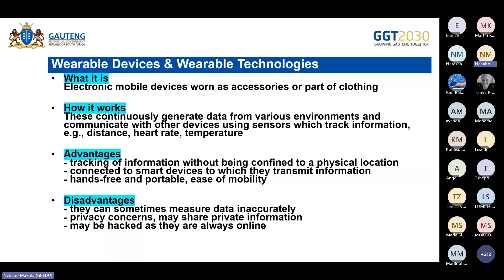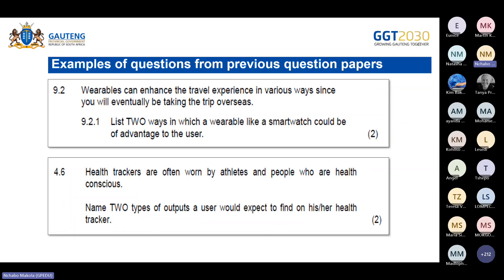From a previous exam: question 9.2 states that wearables can enhance the travel experience and asks you to list two ways a smartwatch could be of advantage. You would mention monitoring the well-being of the person, tracking fitness activities, maintaining healthy routines, providing reminders, and monitoring sleep patterns — listing any two for two marks.